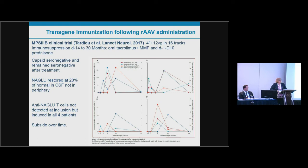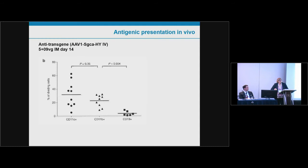A clinical trial published by Tardieu and Zera in Lancet Neurology for treatment of MPS3B found that even with immunosuppression, anti-NAGLU T cells were induced after gene therapy — not detected at induction but appearing subsequently. This is a brain disease making management complex. Experiments show that different APCs — dendritic cells, monocyte macrophages — but not B cells can present the transgene, meaning broad mechanisms are potentially involved in induction of anti-transgene immune responses.